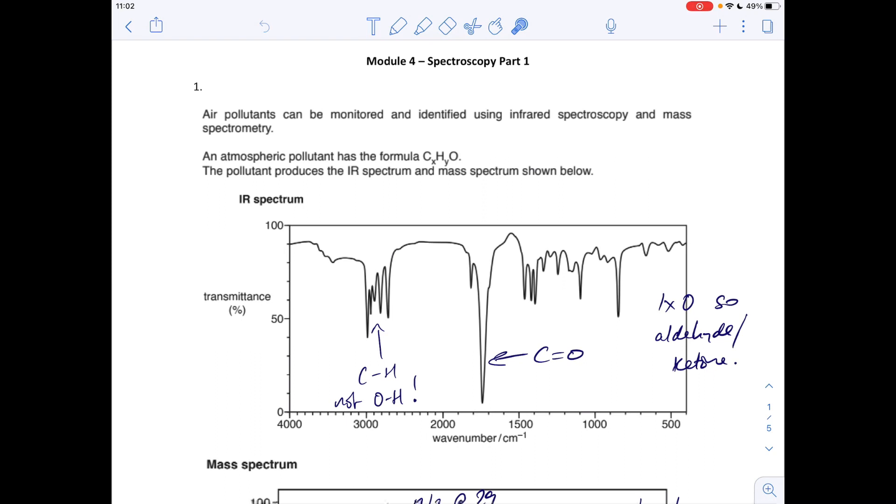Okay, so the first one we've got an atmospheric pollutant with a formula CxHyO and the pollutant's infrared spectrum and mass spectra shown below. So quickly looking at the infrared spectrum, I have two places really that I concentrate on for infrared.